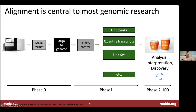You probably get back FASTQ files, then you do some kind of alignment — to the genome or transcriptome — along with quality control. There are probably hundreds or thousands of analysis applications that take read alignments as input, and that's what allows you to do analysis, interpretation, and discovery.